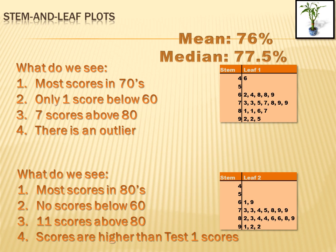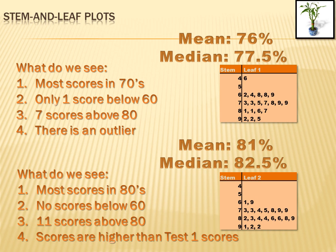Let's look at some other statistics to see if they bear out the same conclusion. The mean for test 1 is 76 and the median is 77.5. For test 2, the mean is 81 and the median is 82.5. So both the stem and leaf plots and the mean and median tell me that the students did better on the second test than they did on the first.